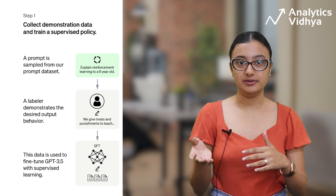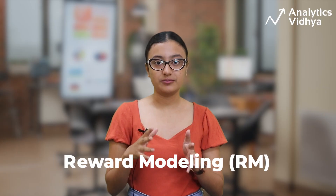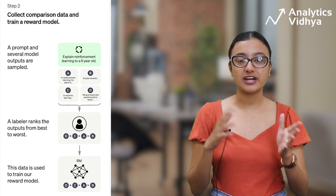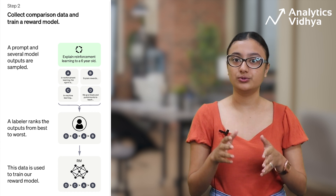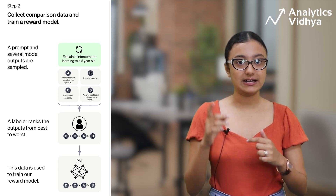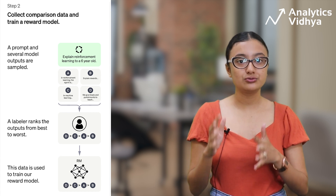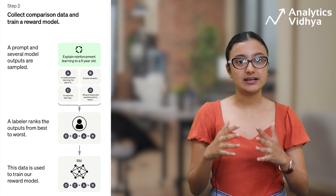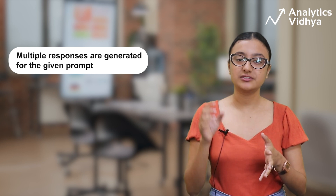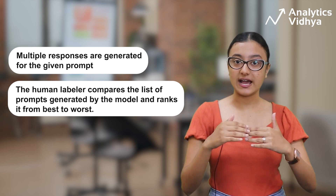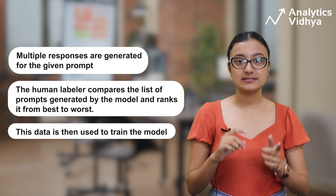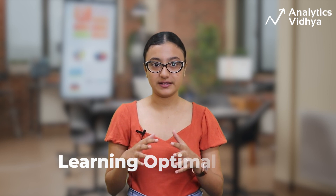The second phase is Reward Modeling (RM). Here we train a reward function that helps the agent decide what is right or wrong and move toward the goal. The reward function is learned through human feedback, ensuring safe and truthful responses. Multiple responses are generated for a given prompt, then human labelers compare and rank them from best to worst, and this ranked data is used to train the model.